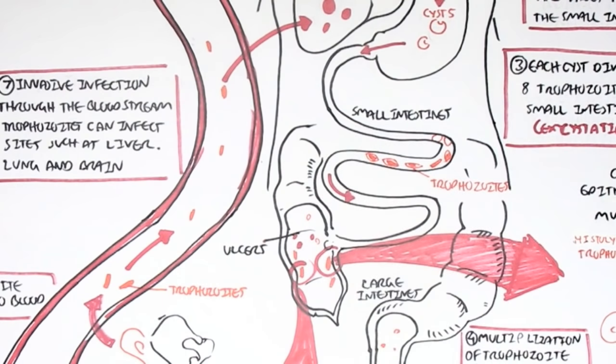Because of this and because of inflammatory diarrhea, amoebic dysentery is characterized by blood and mucus in stool.